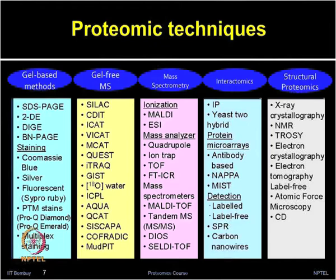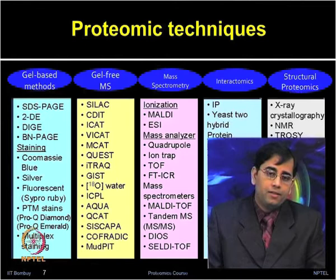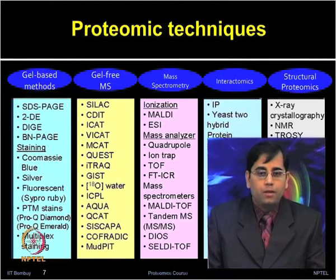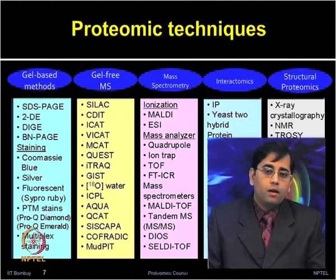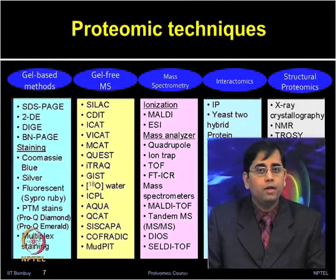Basic mass spectrometry, which is central to proteomic applications, includes different ionization sources such as MALDI (matrix-assisted laser desorption ionization) and ESI (electrospray ionization), and different mass analyzers such as quadrupole, time-of-flight, ion trap, and Fourier transform mass spectrometry. Tandem MS-based systems are also used. Surface-enhanced laser desorption ionization time-of-flight (SELDI-TOF) is used for various clinical applications.